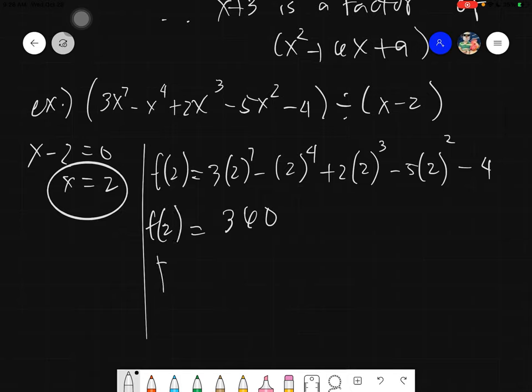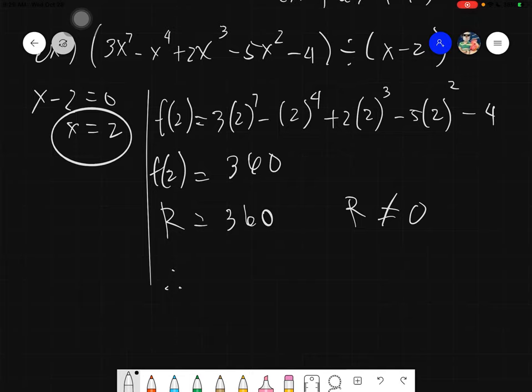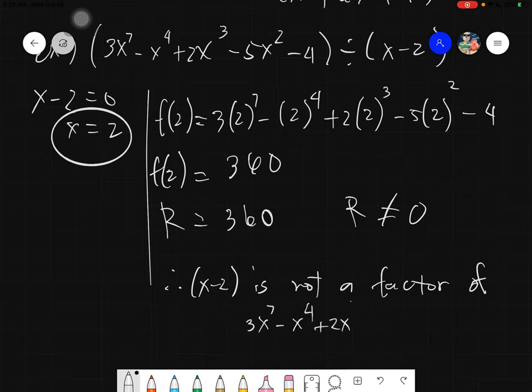So our answer here would simply be 360. Evaluating this, so you do that on your own. So 360, then of course our remainder is 360. Then since our r is not equal to 0, then we can assume that x minus 2 is not a factor of 3x raised to 7 minus x raised to 4 plus 2x cube minus 5x squared minus 4.